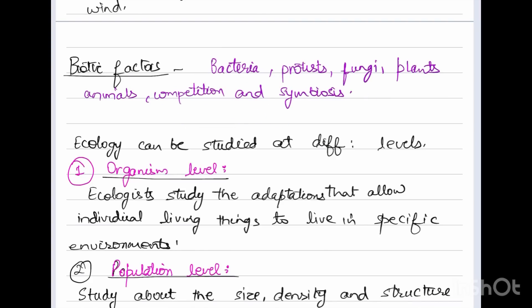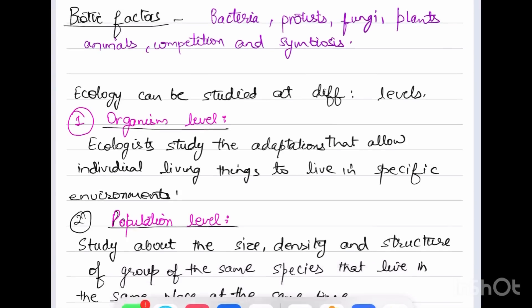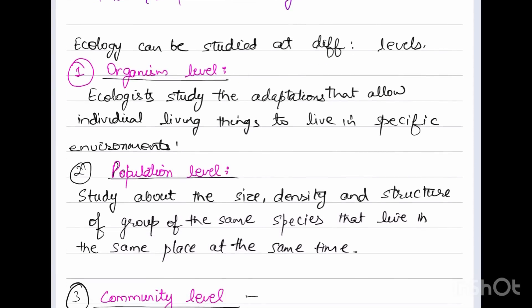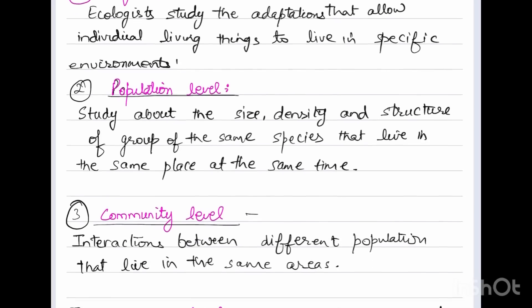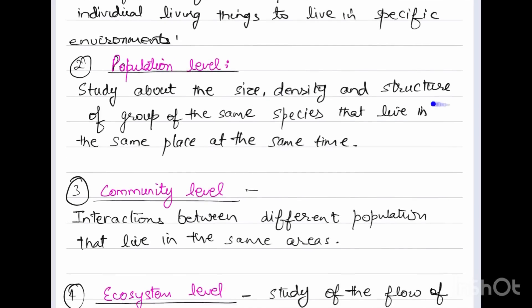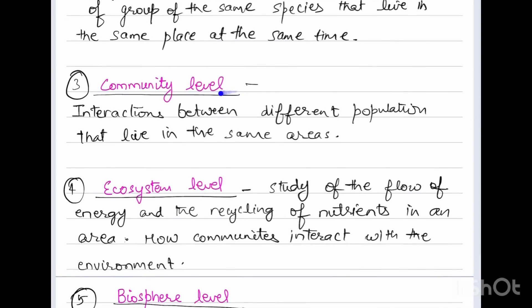Ecology can be studied at different levels. One is at the organism level where ecologists study the adaptations that allow individual living things to live in specific environments. Second, we have population level, the study of the size, density, and structure of groups of the same species that live in the same place at the same time. Third, we have community level.